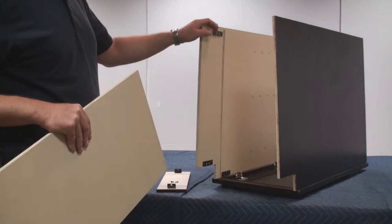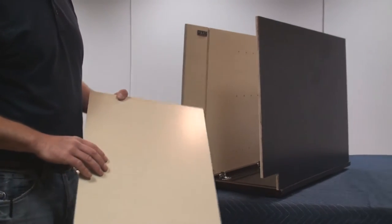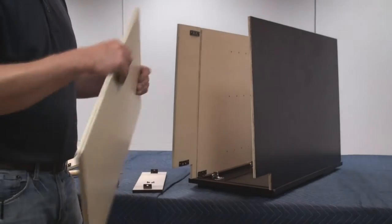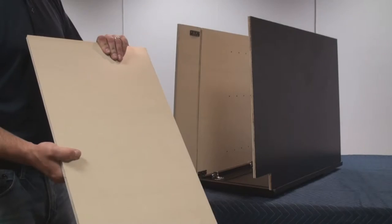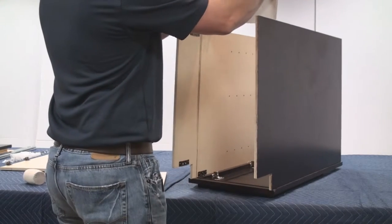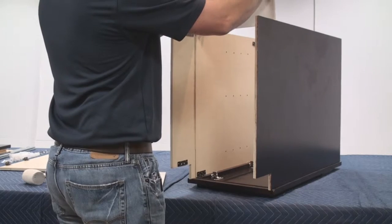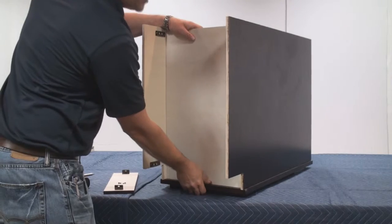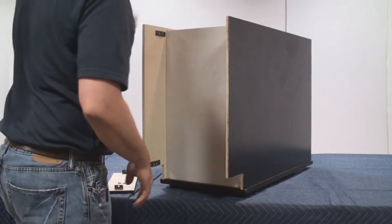Now that we have our sides assembled onto our face frame, we're going to go ahead and install the bottom of the cabinet. Now the bottom of the Shaker Espresso cabinet has a finished side and an unfinished side. We just want to make sure to have that finished side turned towards the inside of the cabinet. We're going to slide it into the corresponding dados. They should slide right in and fit into a corresponding dado on the front of the cabinet.